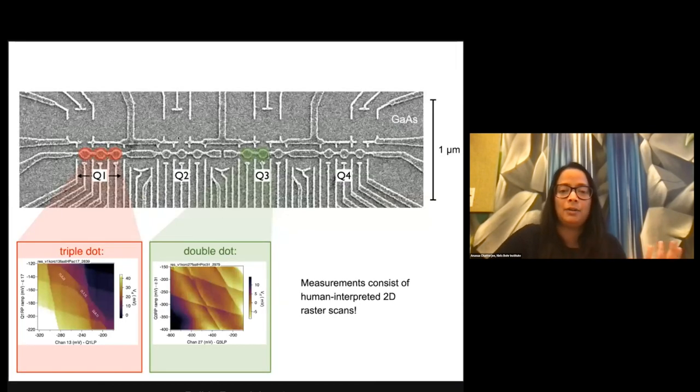Because these always are tuned and measurements consist of human interpreted 2D raster scans. So what do I mean by raster scan? You change these voltages, and you take one point, and you keep doing that until you've built up a 2D image that gives you enough information that you can draw some conclusion and keep going. And of course, this is really not scalable if you want to make a billion of these.